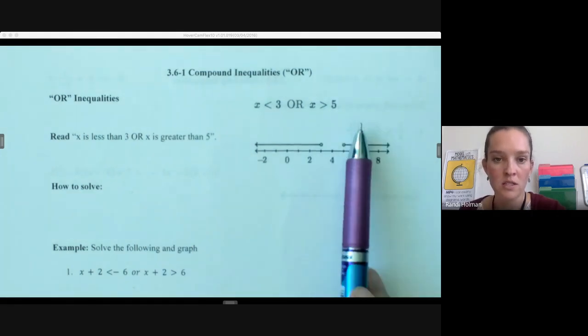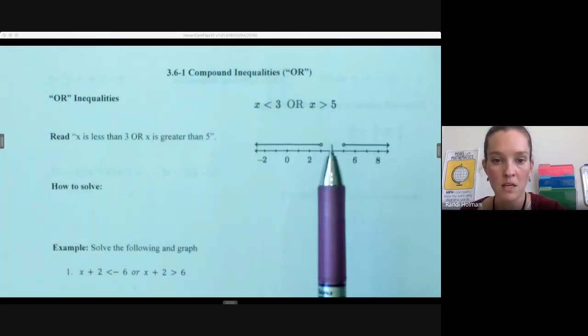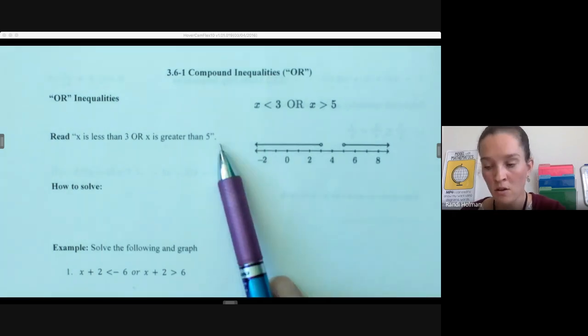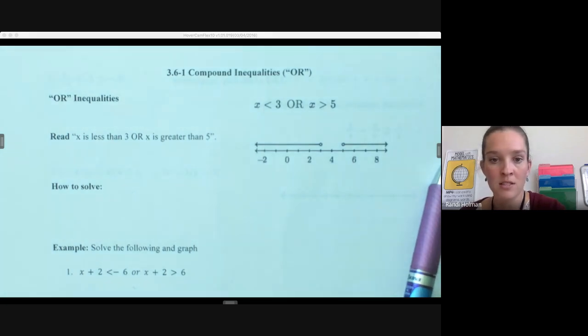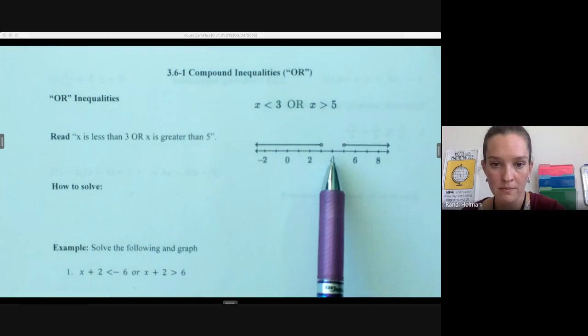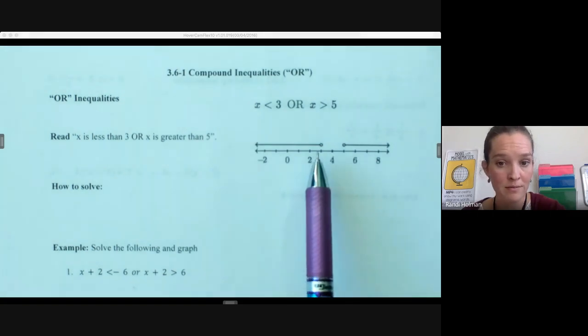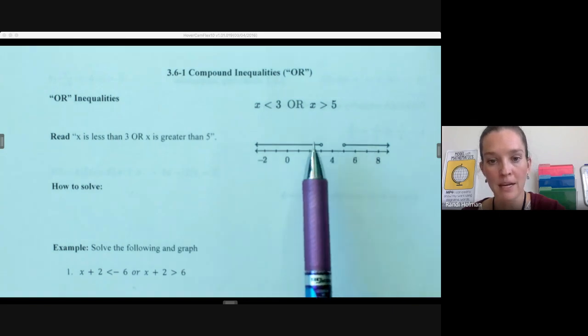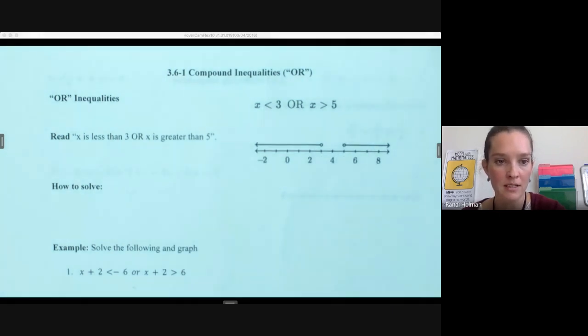So solutions to this compound inequality could be 0 or 8 or negative 10 or positive 500. Things that would not be solutions to this compound inequality would be 4, 3, 4.5. Anything that's in this gap here that our compound inequality doesn't cover.